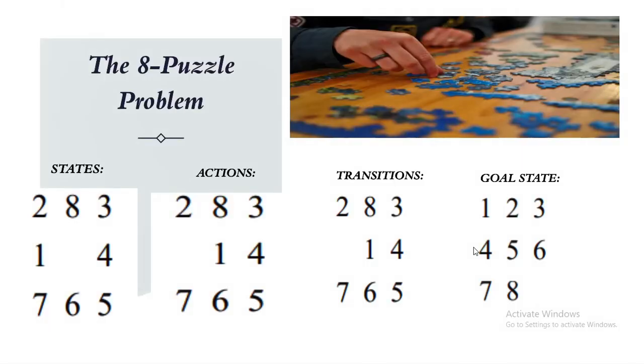Where state represents a specific configuration of the eight puzzle with the positions of the tiles on a three by three grid, and the actions represent the possible moves that can be made from one state to another. For example, actions from the above state could be sliding tile one to the right or sliding tile seven upwards.